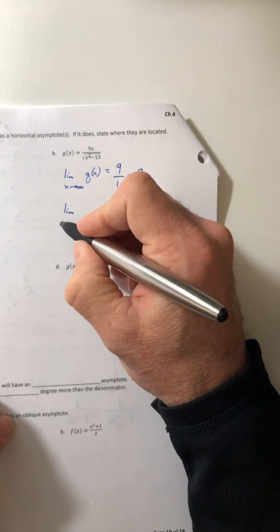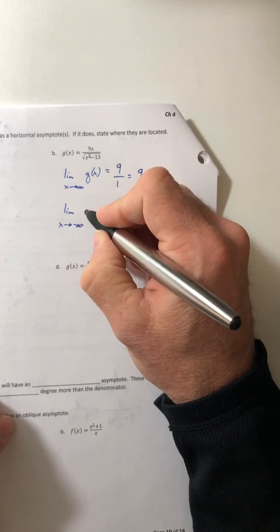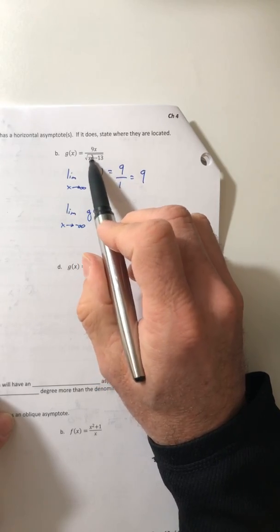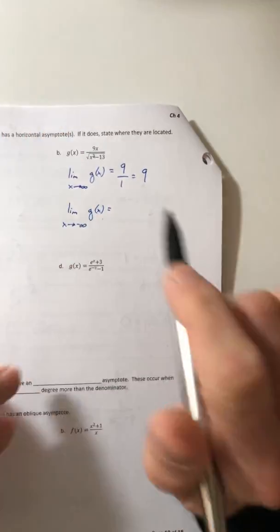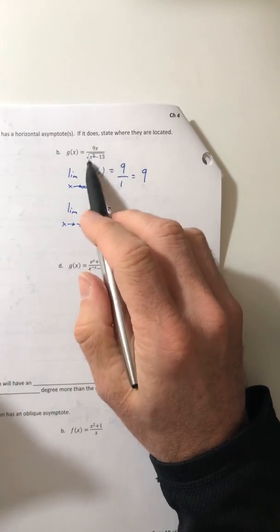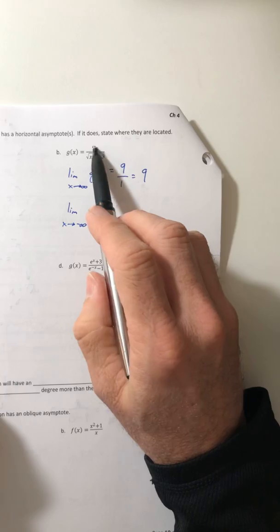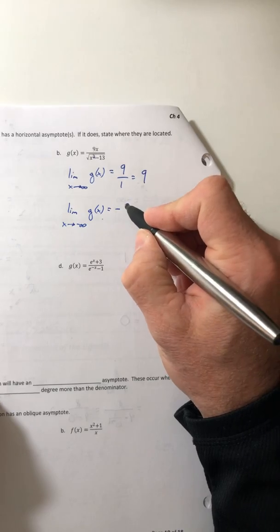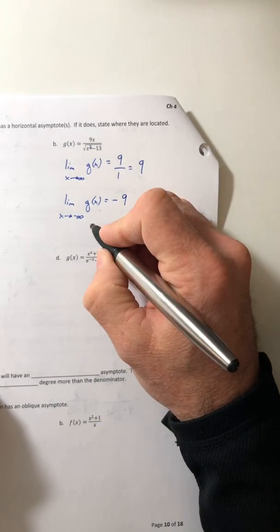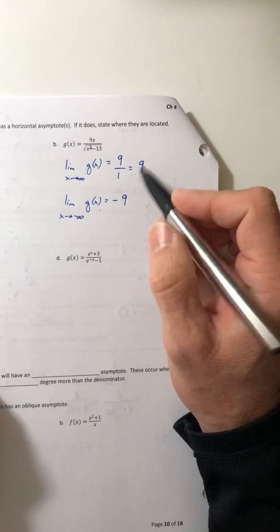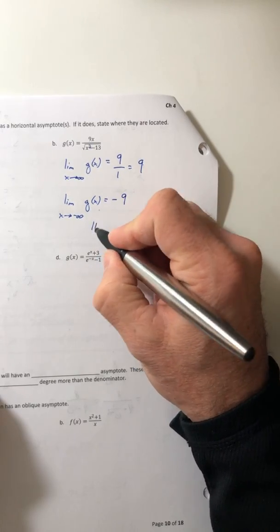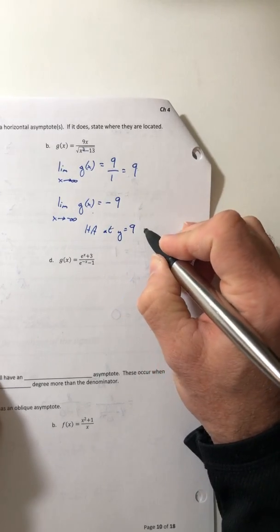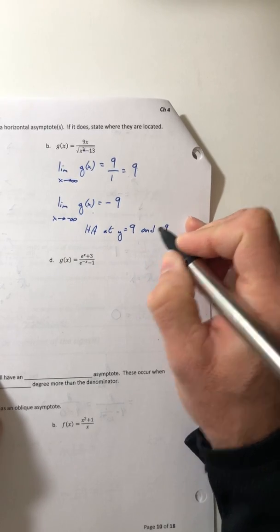But this one, if you let it go off to negative infinity, you still square root of the x squared to give you the degree. So it's going to be a tie again, but now you're going off to negative infinity. So the top is a negative, and the denominator is a positive. So that gives you a negative 9. So you have two horizontal asymptotes because they're different numbers. One at positive 9, and then you have another one at negative 9.